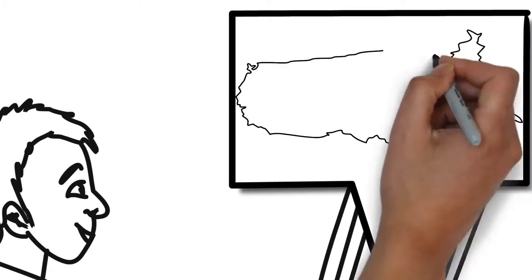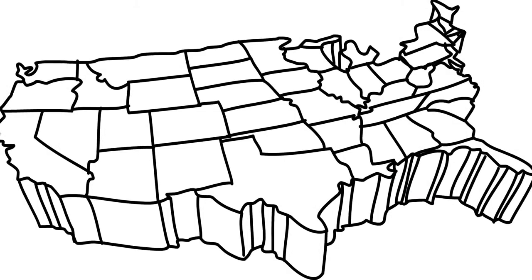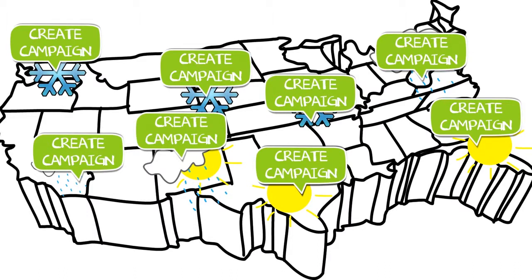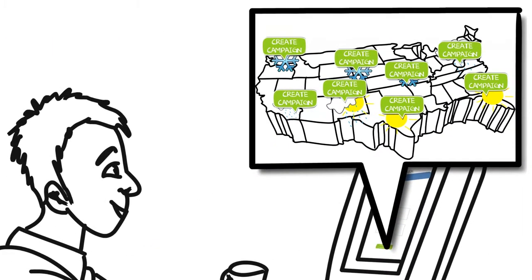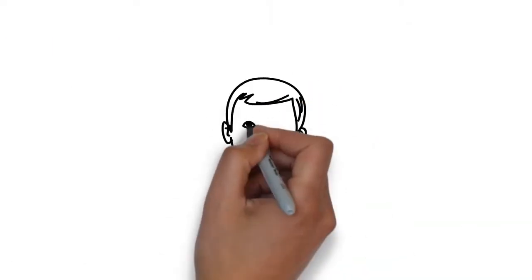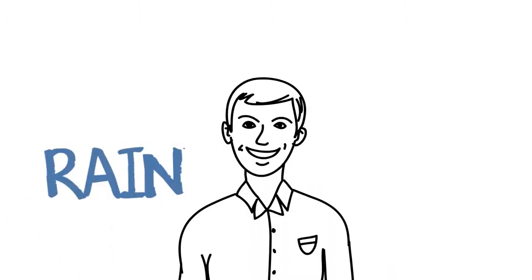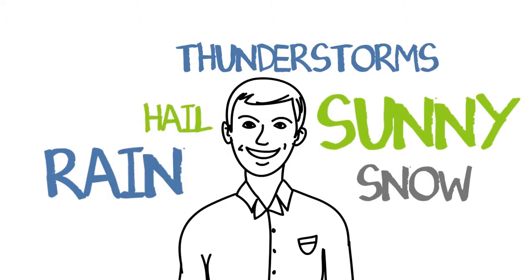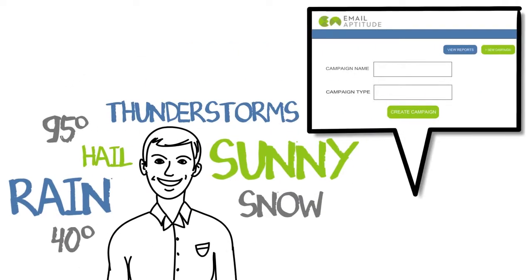Covering more than 25,000 cities in real time, Chris uses the tool to create campaigns triggered for immediate weather changes and alerts for forecasted weather at the city level across all of his subscribers. Chris can create campaigns for virtually any weather condition and easily build as many campaigns as he wants with specific targeting options and merchandise for each scenario.